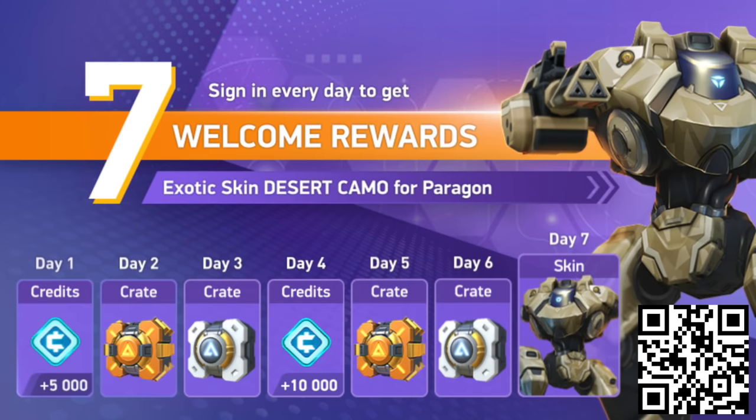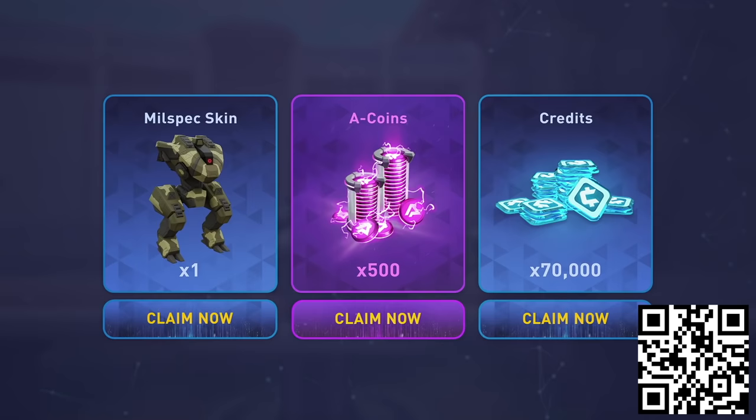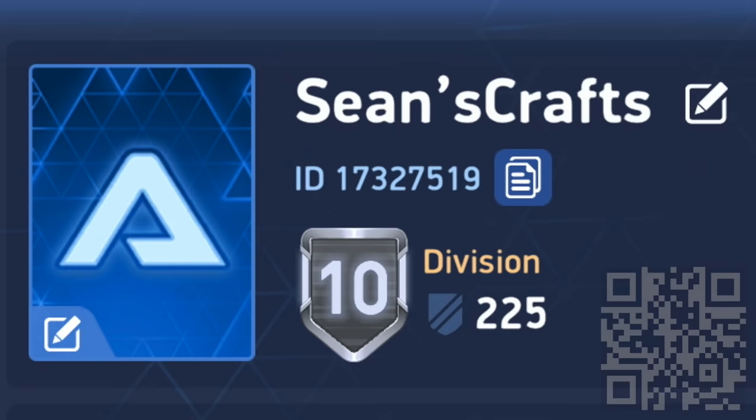Mech Arena is constantly updating the game with tons of fresh new content, and they've got a great login rewards program happening right now, so there's never been a better time to get started. It's completely free to play on both Android and iOS. If you use my link in the description or scan my QR code, you'll get a Mil-Spec skin, 500 A-Coins, and 70,000 credits to help kick start your game. Feel free to add me as a friend and we can play some matches together.